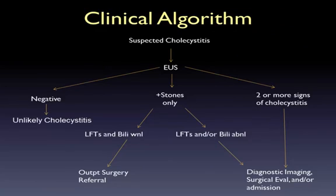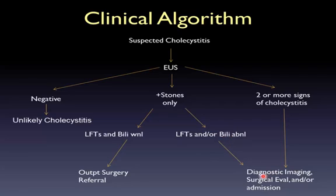Here's a clinical algorithm. You have a patient where you suspect cholecystitis — you do your bedside ultrasound. If the scan is normal, cholecystitis is pretty unlikely, and you decide whether to pursue it further or look elsewhere. If you see just stones, assess how sick the patient is: if symptoms improve, they can take PO, and labs are normal, an outpatient surgery referral for elective cholecystectomy is appropriate. If they're still vomiting or have abnormal liver enzymes or elevated bilirubin, further imaging or a surgical evaluation with possible admission is warranted. If multiple signs are present — stones, tenderness, pericholecystic fluid — you can move directly to further diagnostic imaging or surgical evaluation and likely admission.